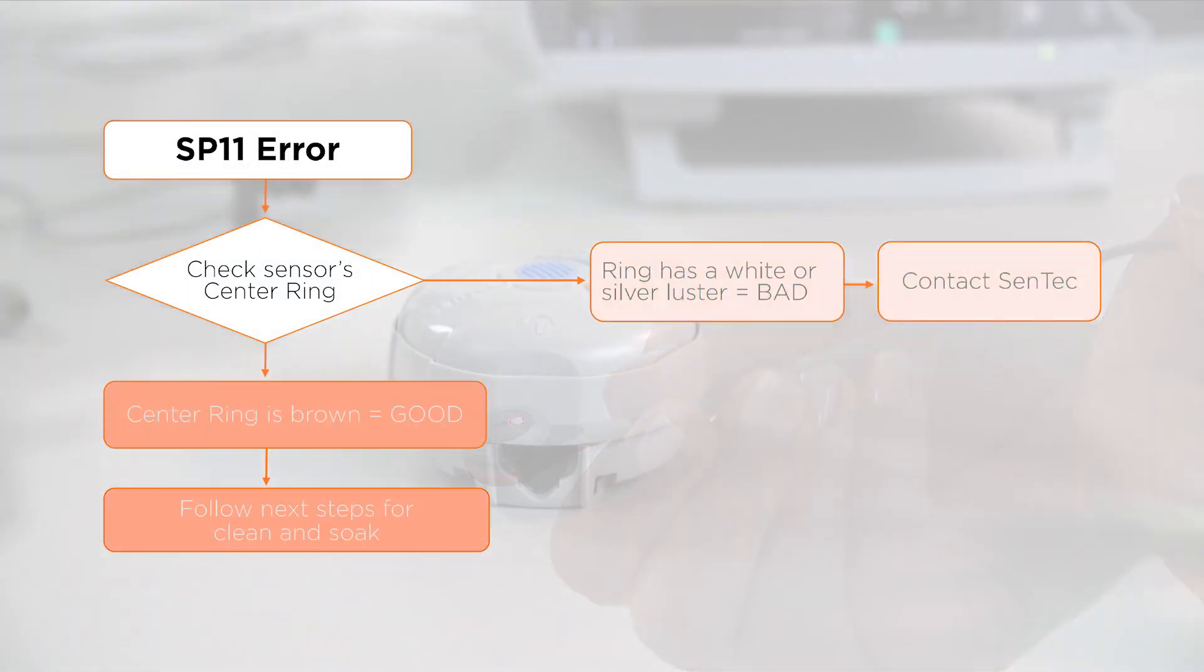If the center ring is brown and intact, follow the next steps for a clean and soak.